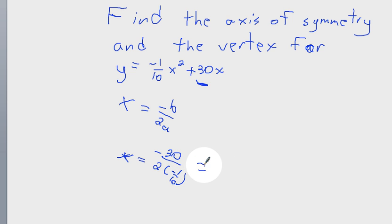If you take negative 30 and you divide by 2, you get negative 15, divided by negative one-tenth, you get 150. So the axis of symmetry is x equals 150.